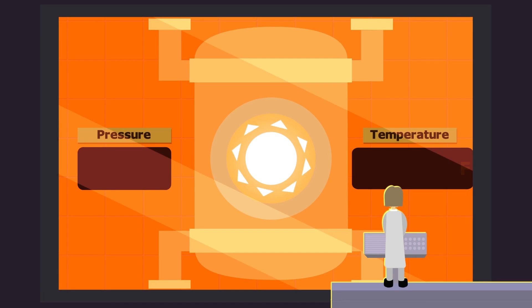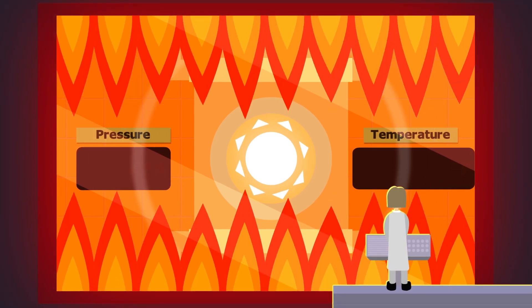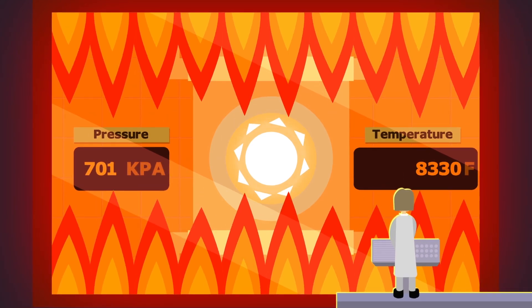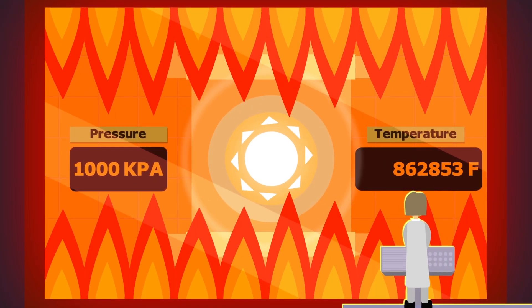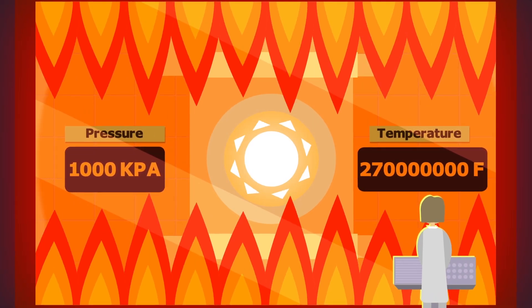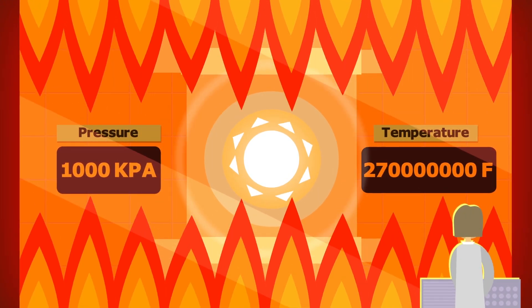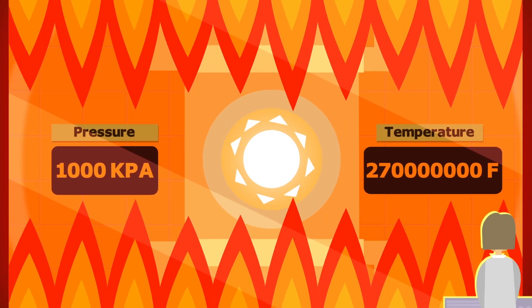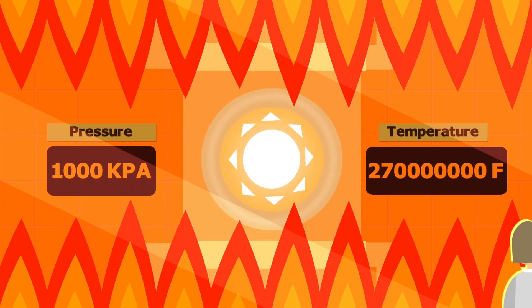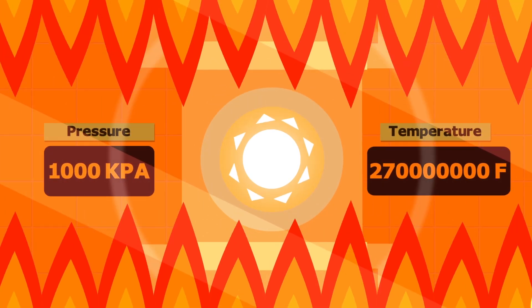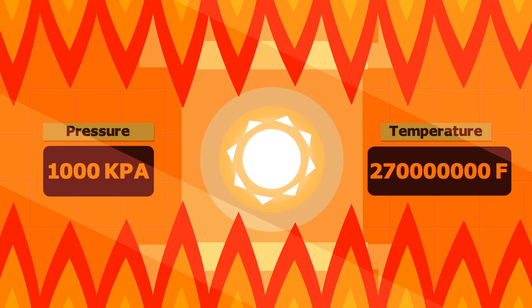The problem perplexing physicists is that harnessing it is very difficult. Extremely high pressures and temperatures of 270 million degrees Fahrenheit are required in order to join lighter atomic nuclei to form a heavier nucleus. To put that into perspective, the center of the sun is around 27 million degrees Fahrenheit.